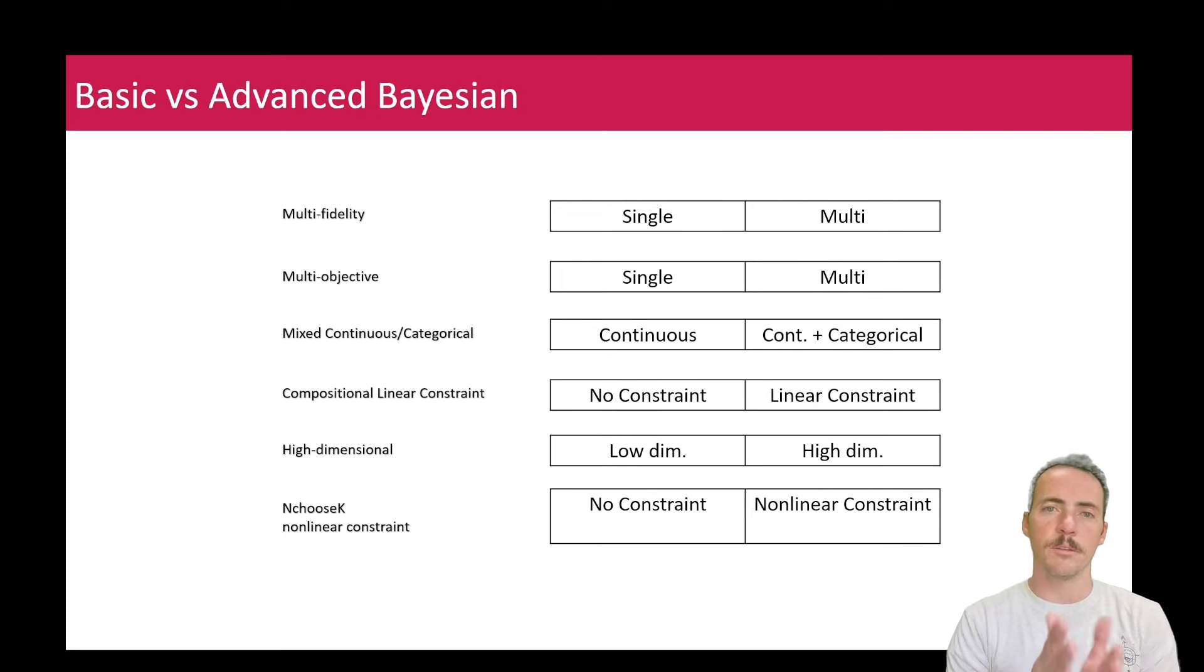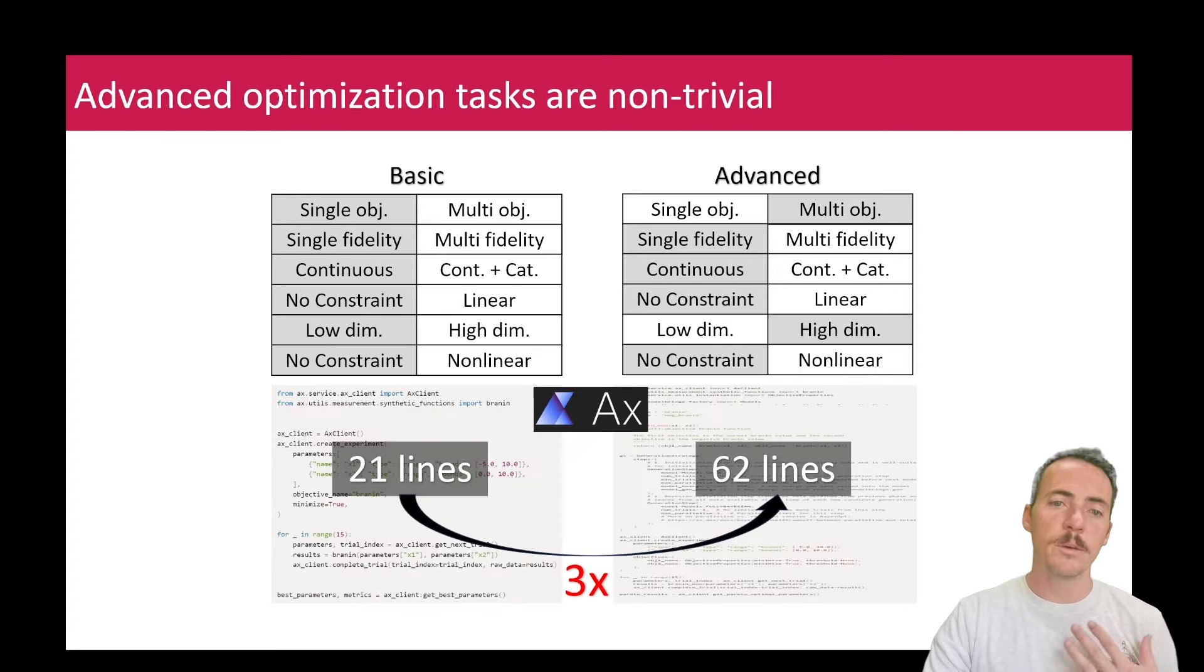All those things, this is what, like six different categories or conditions, if you will. In each of those, you can have sort of a simple scenario. So the simple scenario, like the basic would be like single fidelity, not multi-fidelity, single objective, not multiple, continuous variables, as opposed to a mixture, no constraints, low dimensionality, no n choose k constraints. But there's also a possibility that you're going to have advanced Bayesian optimization, which is going to include the more difficult versions of these.